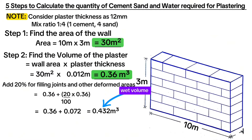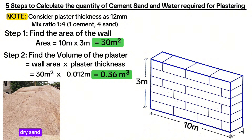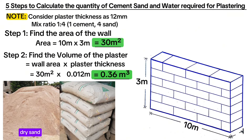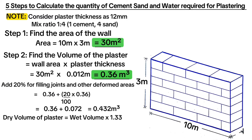But what do we purchase? We purchase sand and cement, which are in a dry volume state. For example, dry volume sand has no water in it, and dry volume cement has no water in it. To convert wet volume into dry volume, we multiply the wet volume by the constant factor 1.33: 0.432 m³ multiplied by 1.33 gives 0.57 m³.